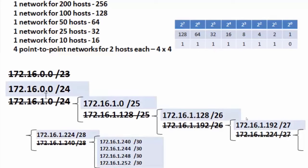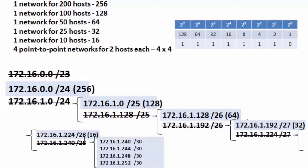Looking at the subnets that remain: 172.16.0.0/24 for 256 hosts, 172.16.1.0/25 for 128 hosts, 172.16.1.128/26 for 64 hosts, 172.16.1.192/27 for 32 hosts, 172.16.1.224/28 for 16 hosts, and the four /30 subnets — 240, 244, 248, and 252 — for four hosts each. These sizes reflect total addresses, not usable hosts; for usable host addresses, subtract two from each subnet.